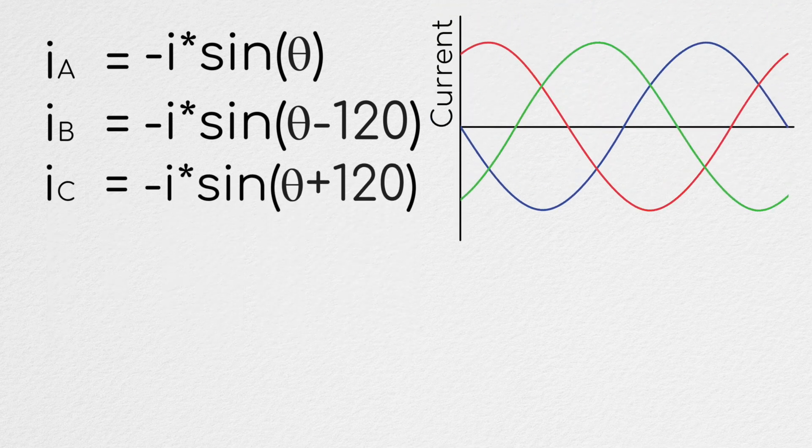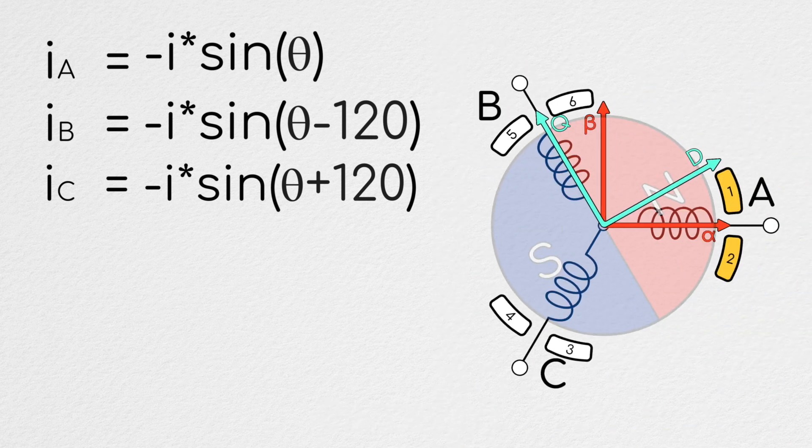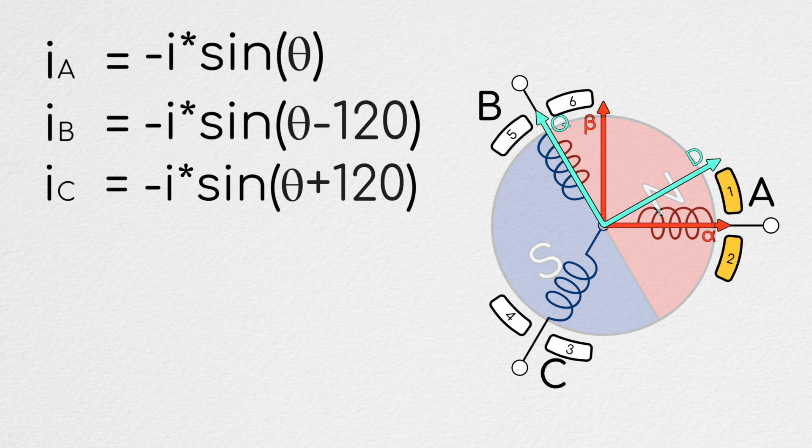This means that the three sinusoids we showed earlier are a valid combination of currents. But what effect does this have on the currents in our alpha and beta directions?